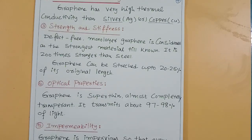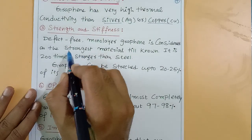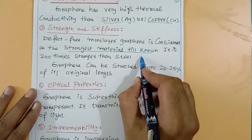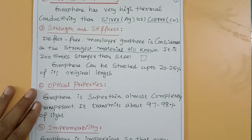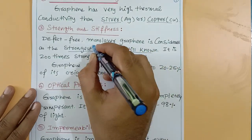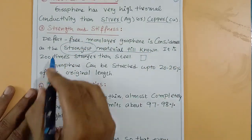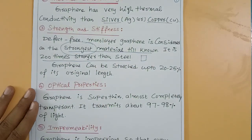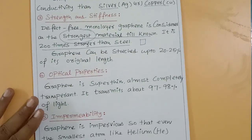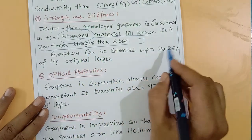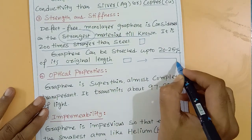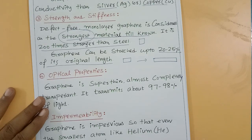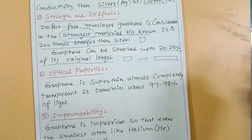Third property: strength and stiffness. A defect-free monolayer of graphene is considered the strongest material known so far. It is 200 times stronger than steel, while also being lightweight. Graphene can be stretched up to 22–25% of its original length.